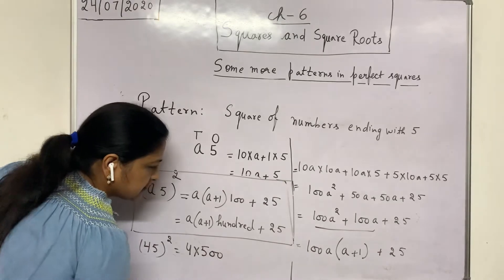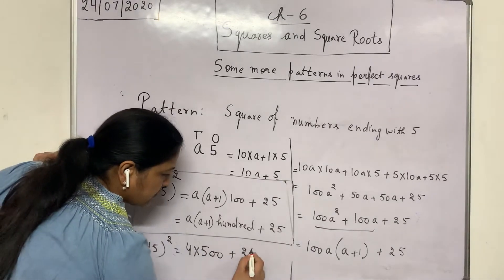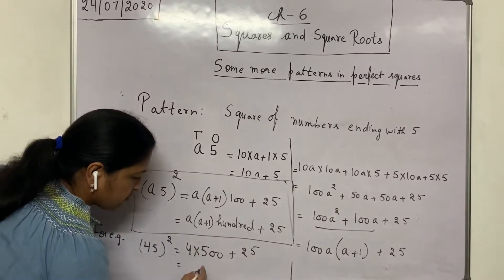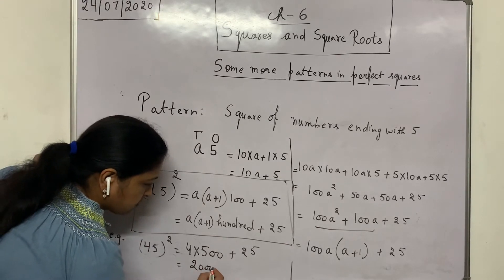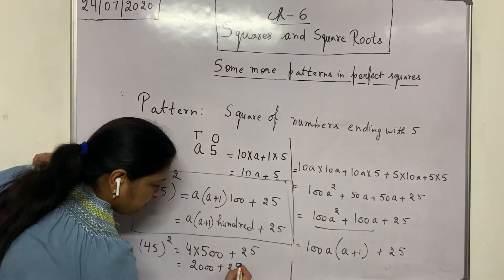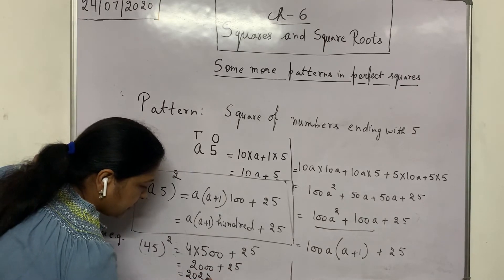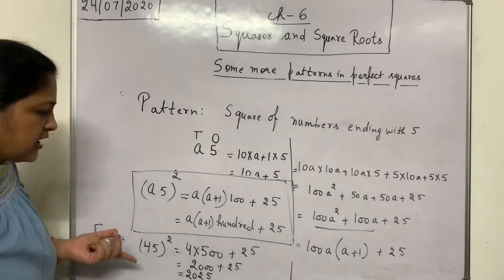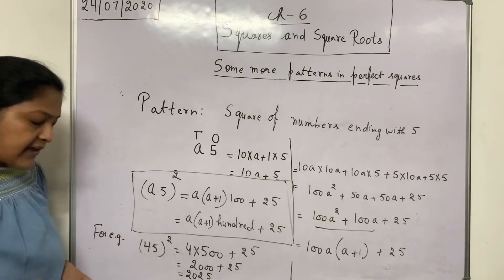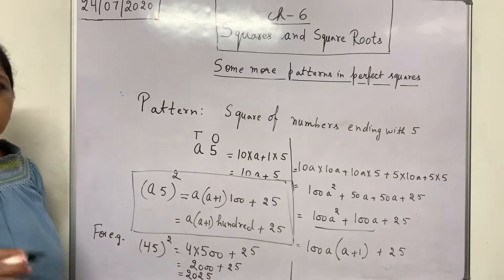100 plus 25. So it is 5 into 20 and then 20, 2000 plus 25. So the answer is 2025. See how easily we have calculated the square of 45. 2025.